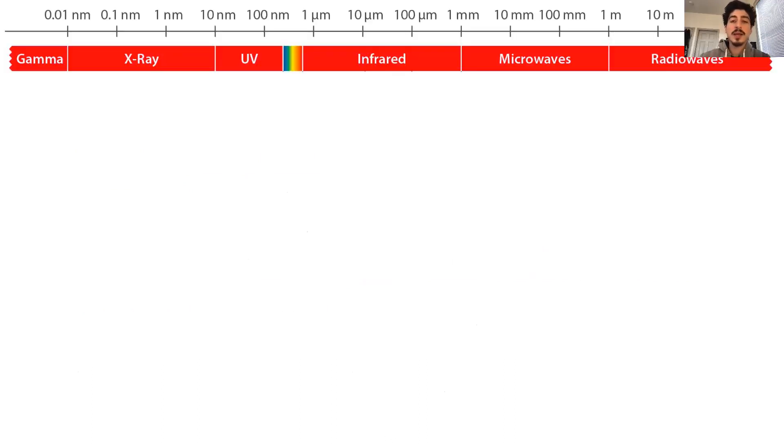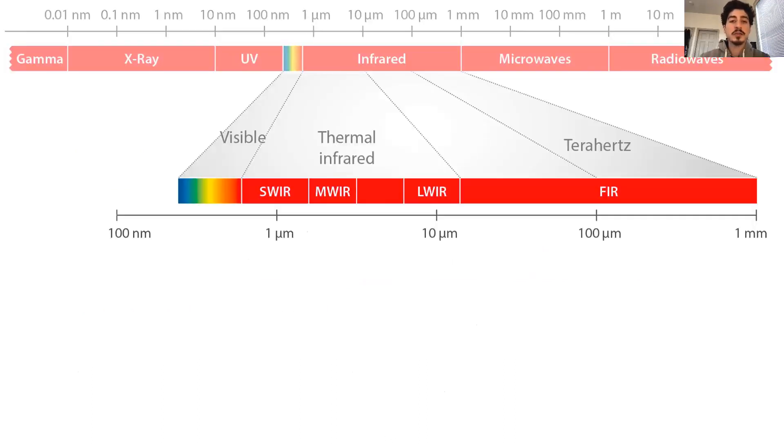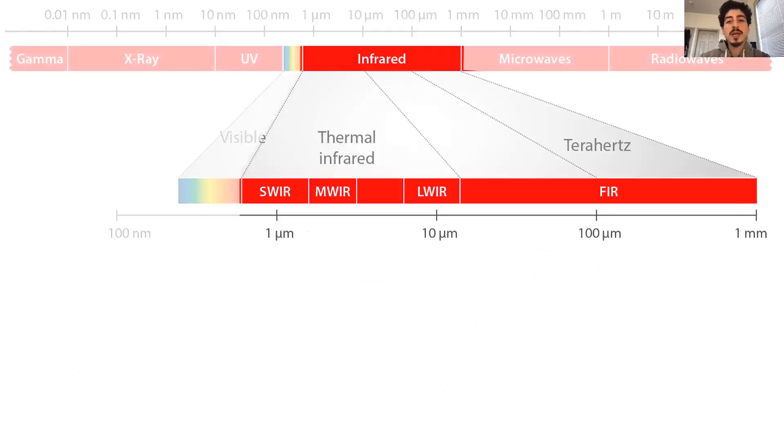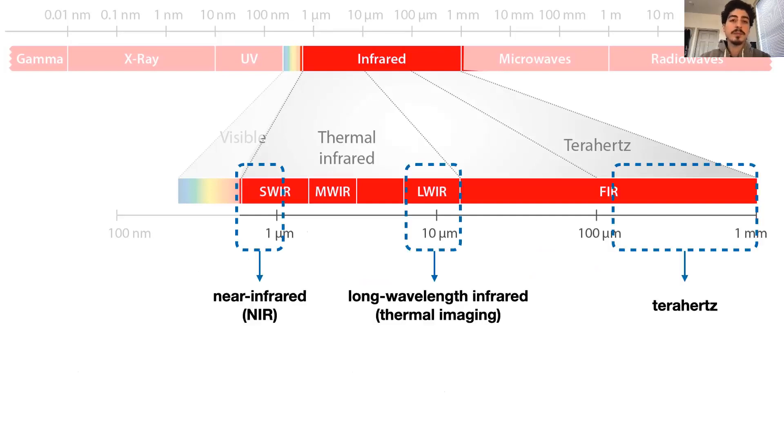Here you see the electromagnetic spectrum, and here is a section of it. On the left side, we see the visible region, and on the right, we have different regions of infrared light. Because infrared cannot be directly seen by humans, we can use these regions to encode and decode invisible information. Here, you see some of the regions within infrared, from near-infrared to terahertz.